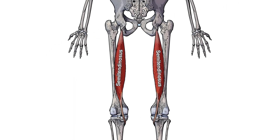We can see pictured here the semitendinosus muscle in isolation, and this is from a posterior view — so it's from the back. It can be a little bit difficult to understand its positioning in relation to other muscles without seeing them all together, so let's swap over to a surface view so that we can compare it to where the other muscles are located.